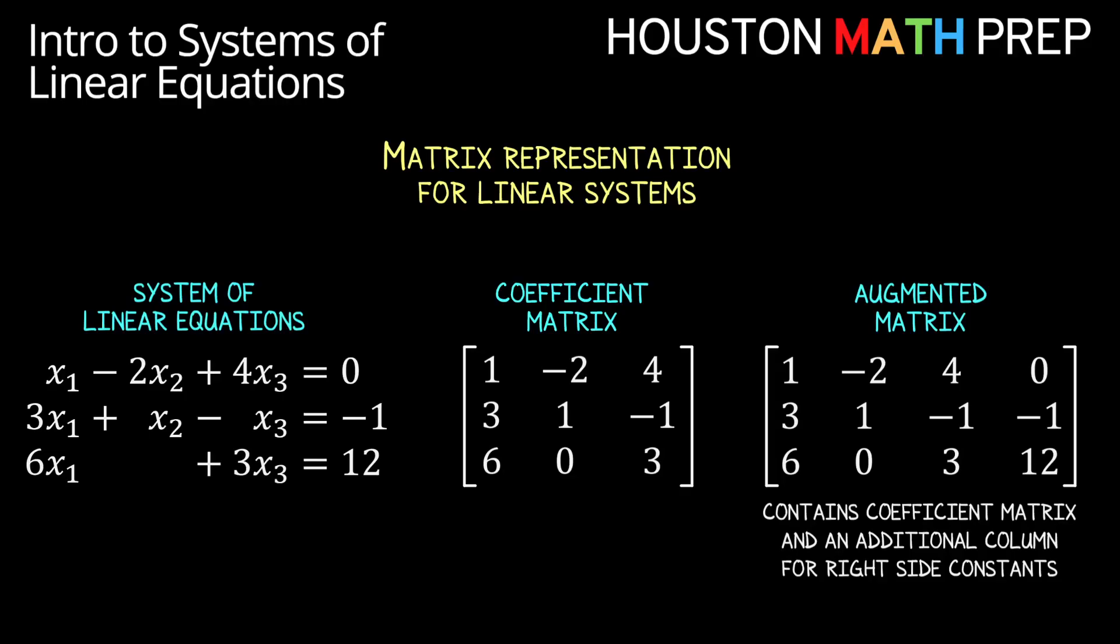Often we'll also want to include information about the constants on the right side of each equation, so that will give us an additional column for our matrix, and we call that matrix that includes this information the augmented matrix for the linear system.